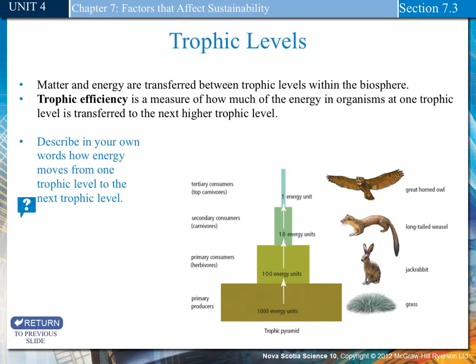Trophic levels. Matter and energy are transferred between trophic levels within a biosphere. Trophic efficiency is a measure of how much energy in an organism at one trophic level transfers to the next.